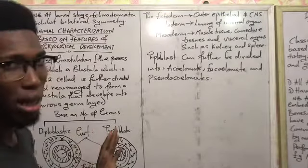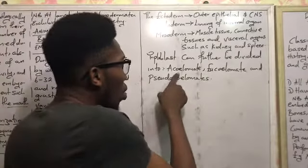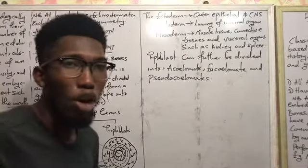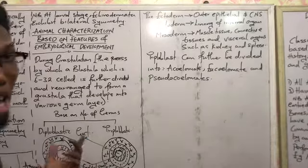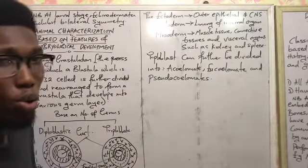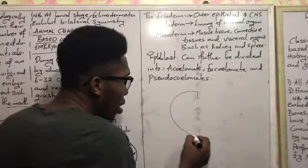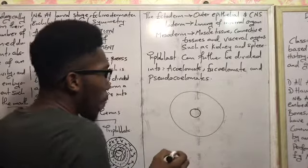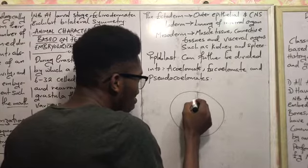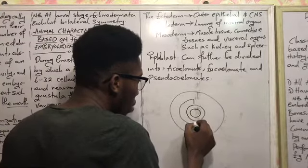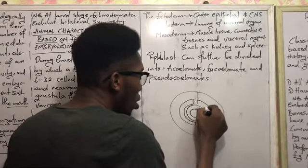Those are the three divisions we have from triploblasts, and this division is based on the possession of a body cavity called a coelom. Acoelomates do not have a body cavity around their organs. Now let's draw this structure — you have a gut region, the endoderm surrounding the gut as the innermost germ layer, and then a cavity region that we call the coelom.